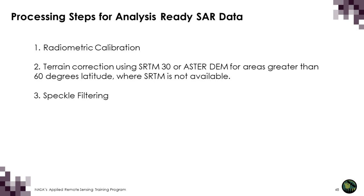The processing steps for SAR data to be analysis-ready are: apply a radiometric calibration, a geometric calibration for terrain correction using a digital elevation model, and then apply a speckle filter. In the case of Sentinel-1 on Google Earth Engine, the data is already analysis-ready except it hasn't been speckle-filtered — we'll walk through that in the demo.